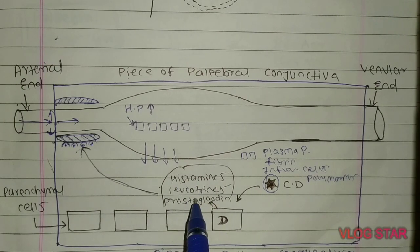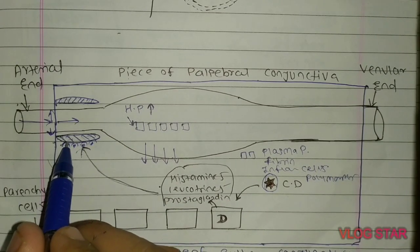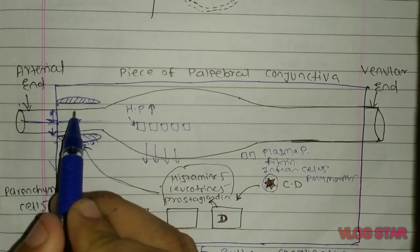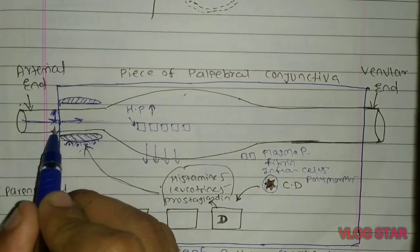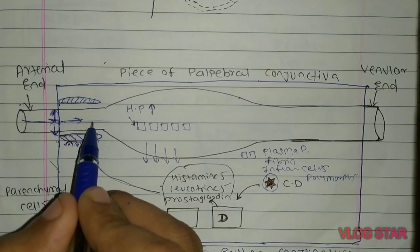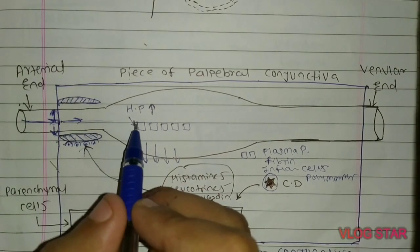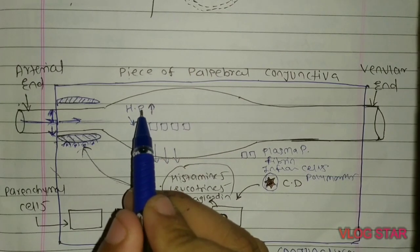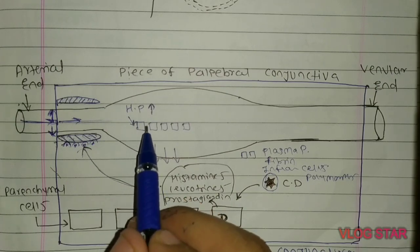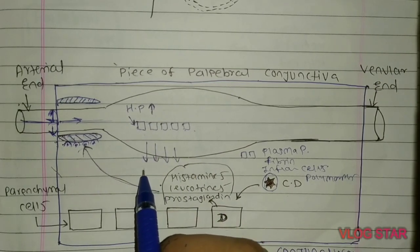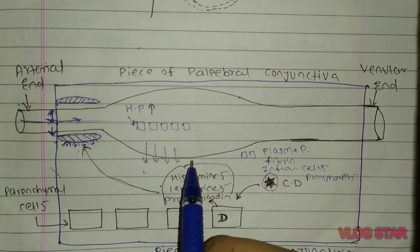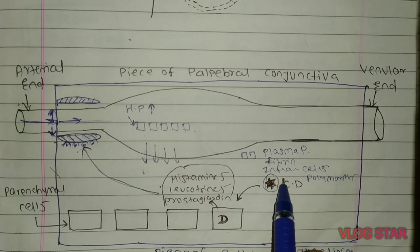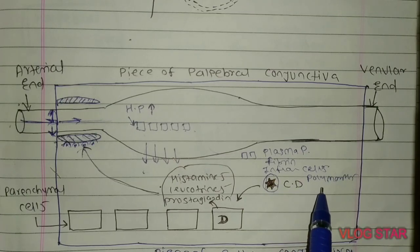These secreted chemical mediators bind to receptors on smooth muscle. Once the receptors are activated by histamine, leukotriene, and prostaglandin, the smooth muscles relax, causing the arterial end to dilate. More blood flows into the capillary, raising the hydrostatic pressure — which is an outward driving force — pushing plasma proteins, fibrin, inflammatory cells, and polymorphs outside the blood vessel.